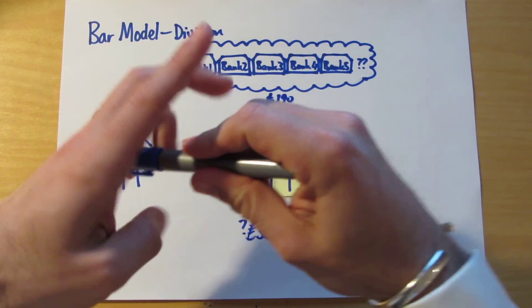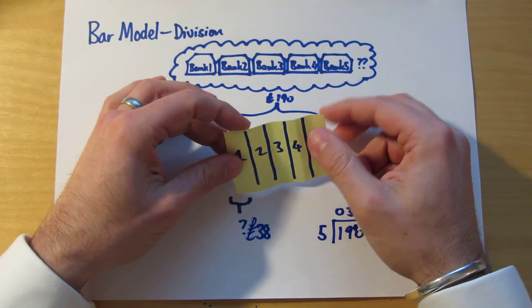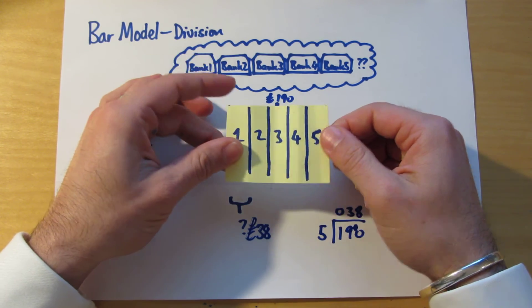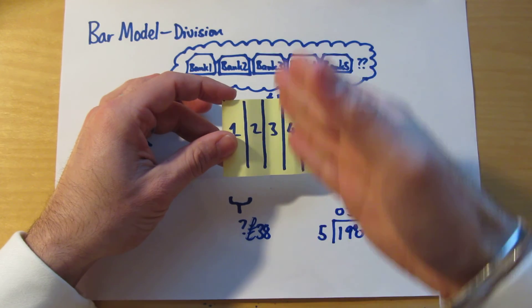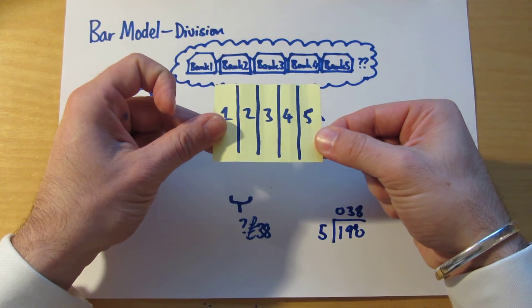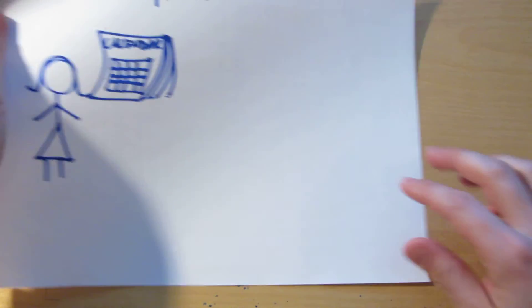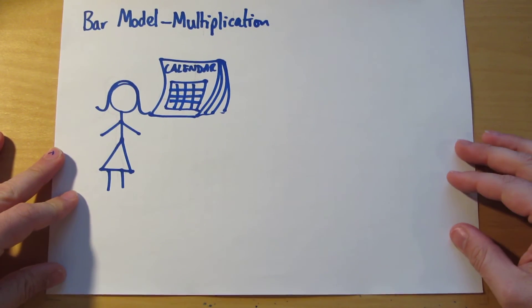So the important thing that we need to understand is that we can represent a division problem using a bar model as well by dividing up the rectangle into equal pieces. Here we've divided it into five equal pieces. We have one more problem to try and solve using the bar model. It's a multiplication problem.